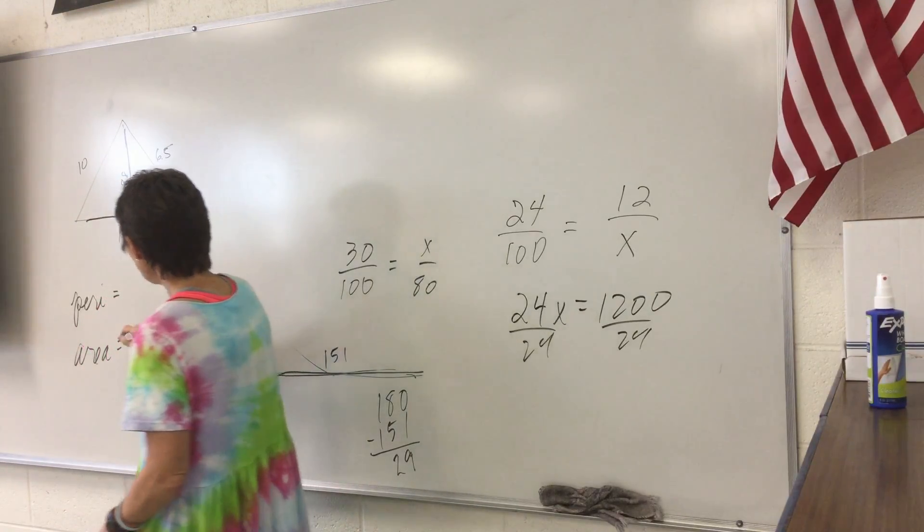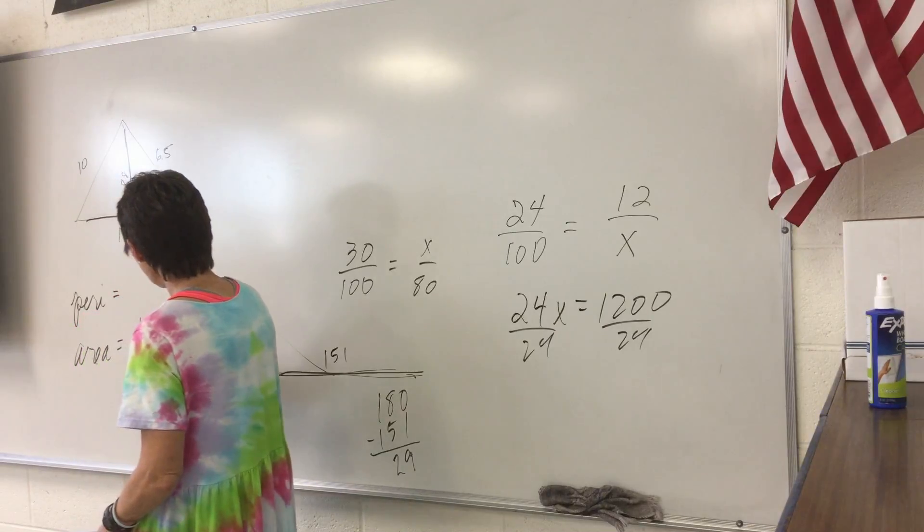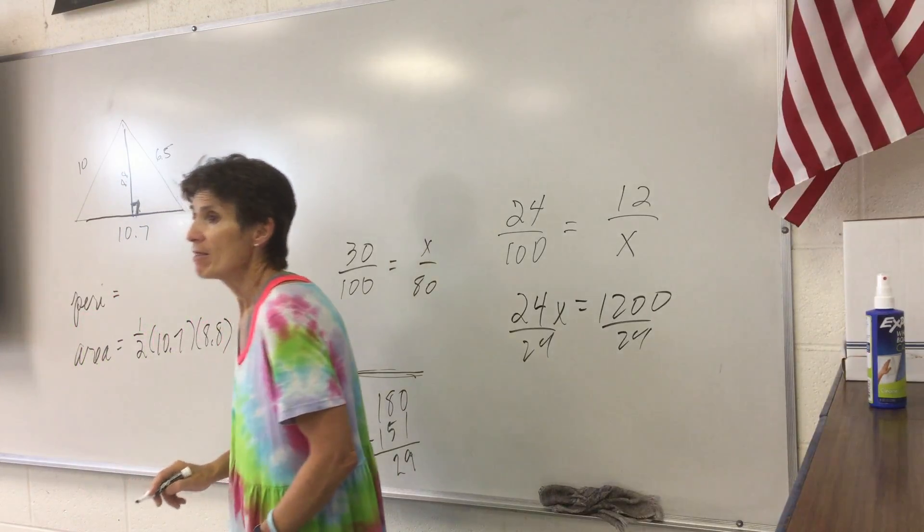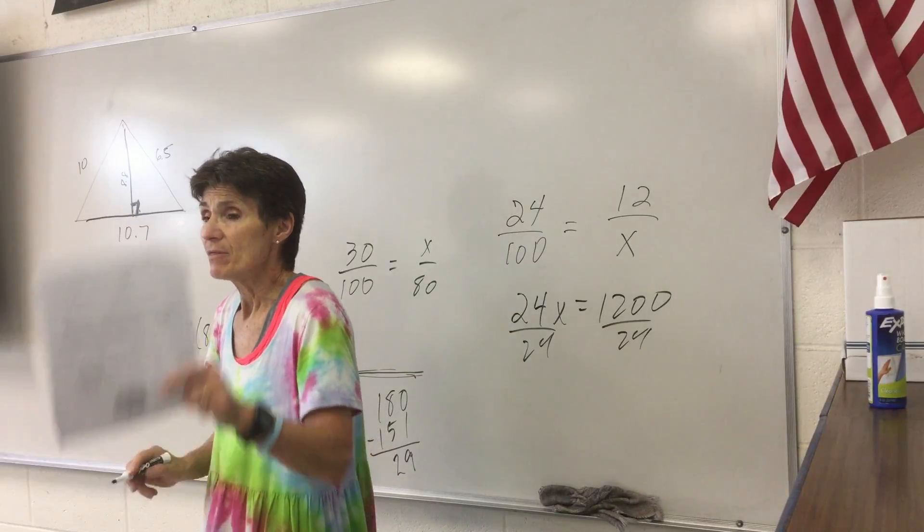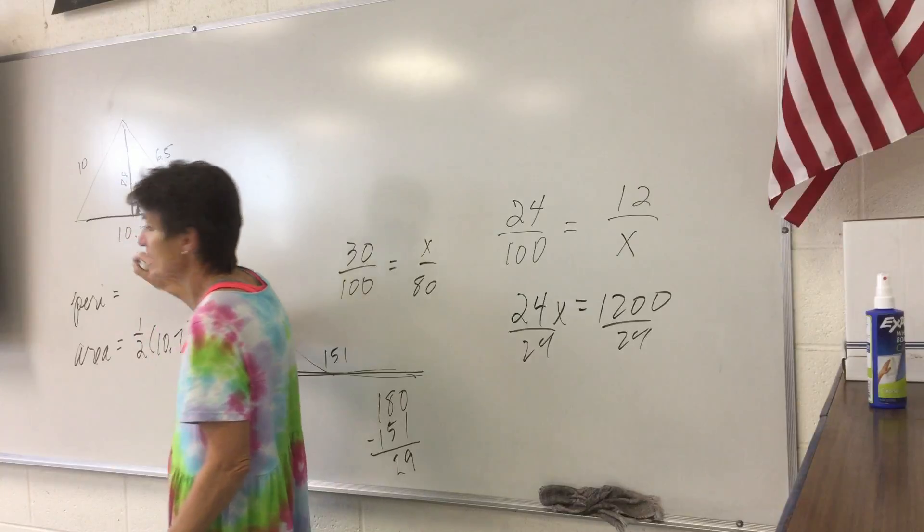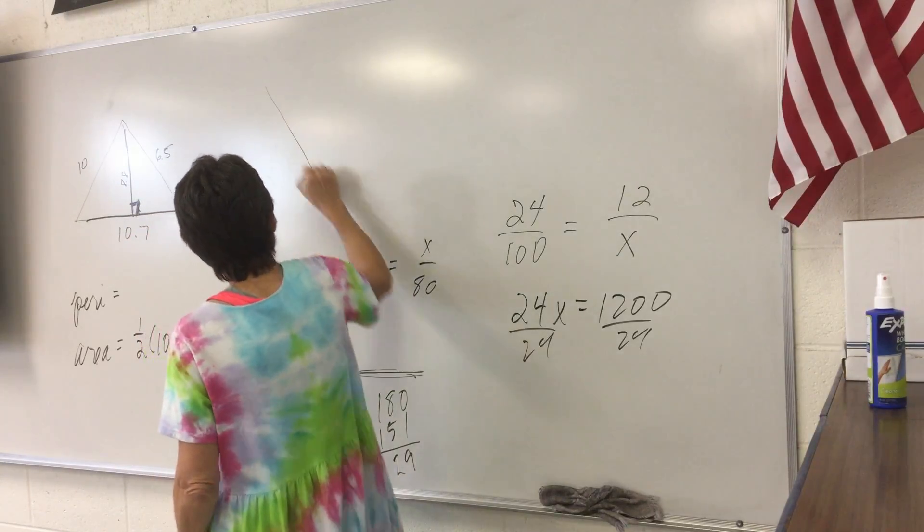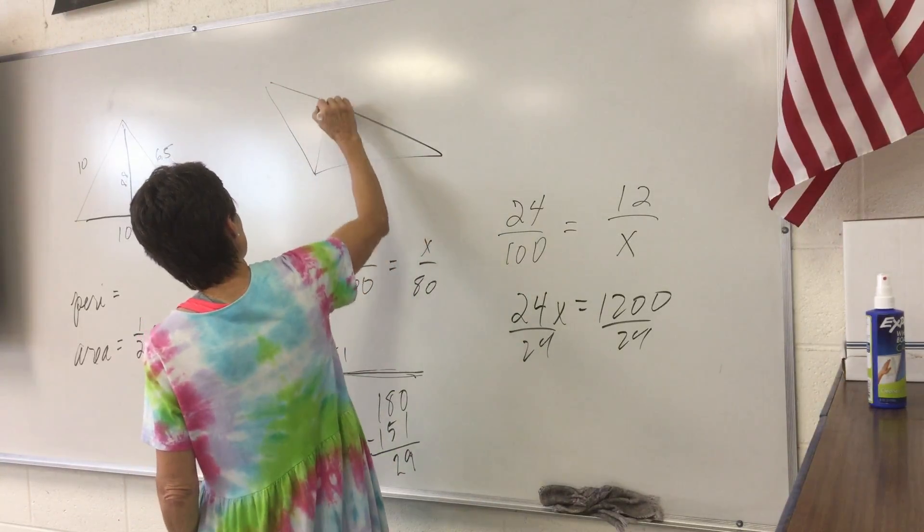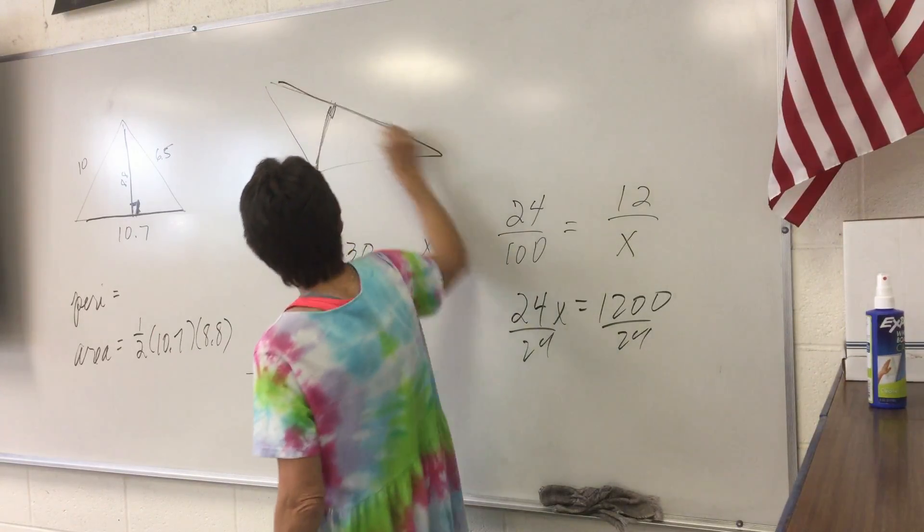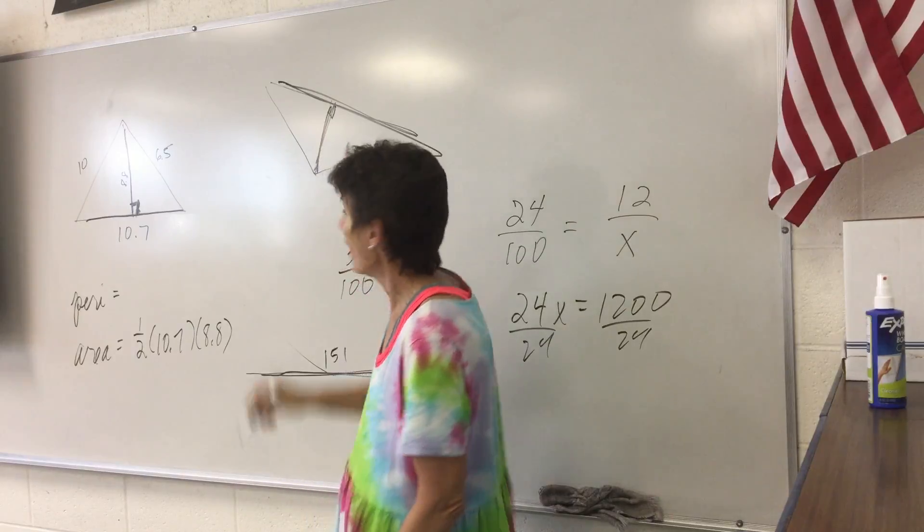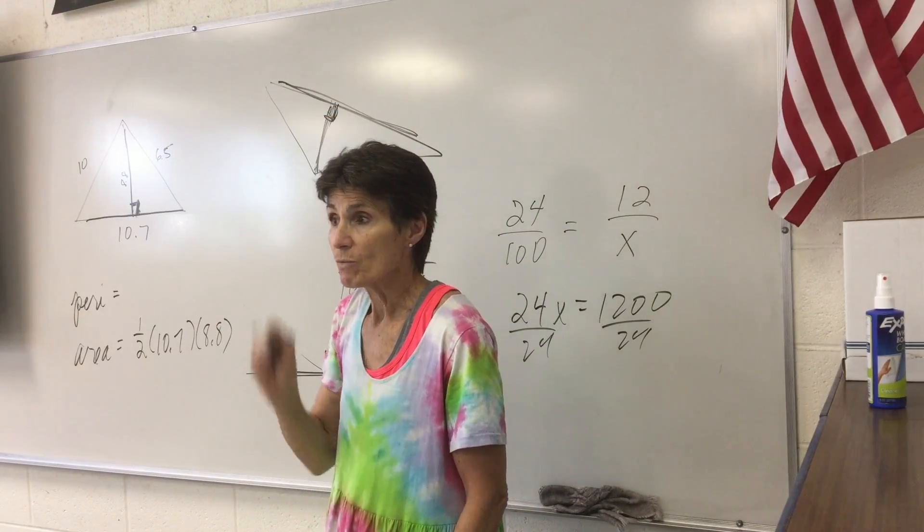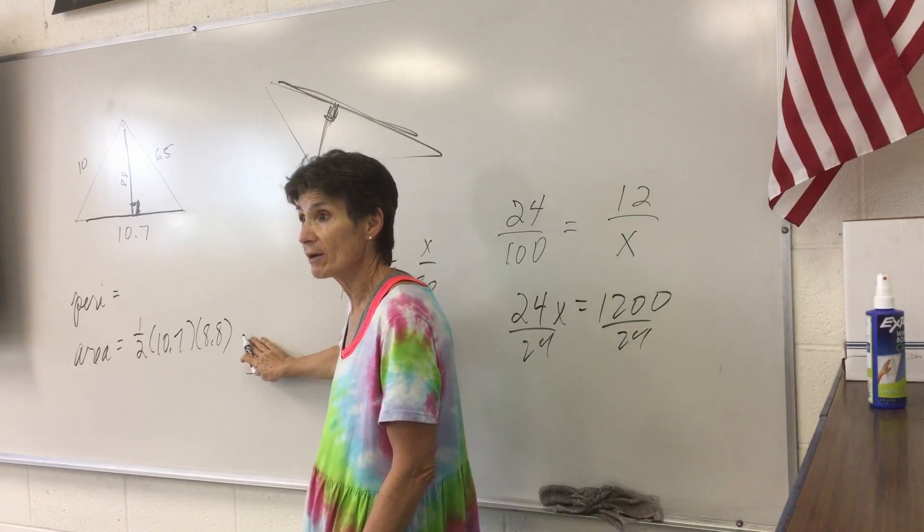Yes. So if you're doing area, it's one-half 10.7 times 8.8. That is the area. The base and the height are the two sides that make the right angle. So I don't care what this triangle looks like. If it's on its side, this and this would be the base and the height because they come together at that right angle. So that's how you're going to find your area.